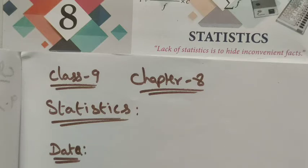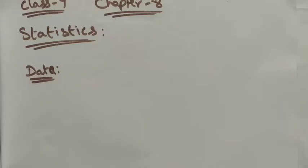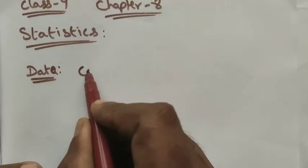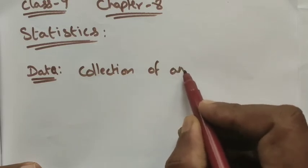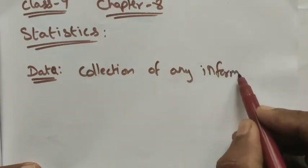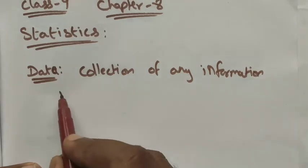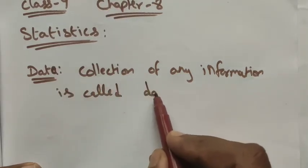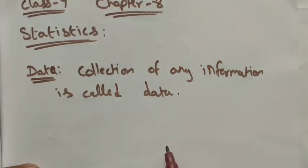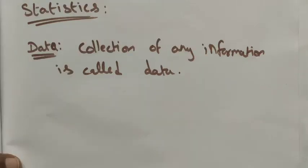First of all, we want to know what is data. Data is a collection of any information — that is the definition for data. For example, in our class, how many students scored centum in maths, how many students scored below 50 in maths — these informations collected from the classroom are called data.